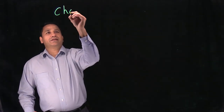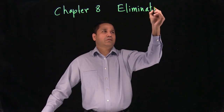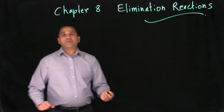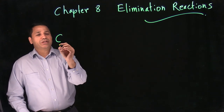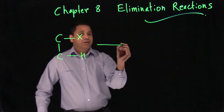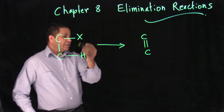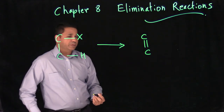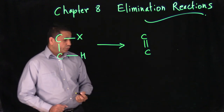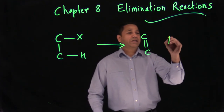Next chapter is Chapter 8: elimination reactions. If you remember, we talked a little about elimination reactions last time. Elimination is losing a group from the molecule — specifically losing H and X to create a double bond. This reaction can also have two mechanisms, just like SN1 and SN2, which are called E1 and E2.